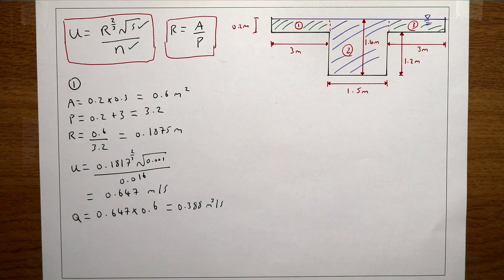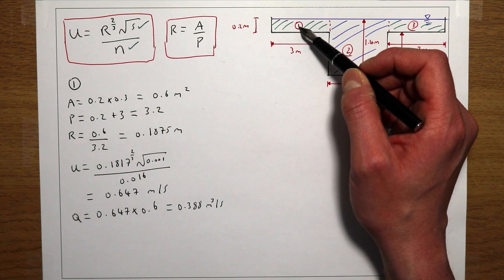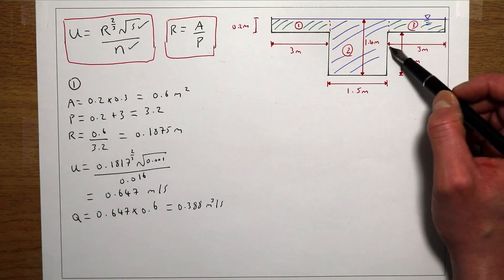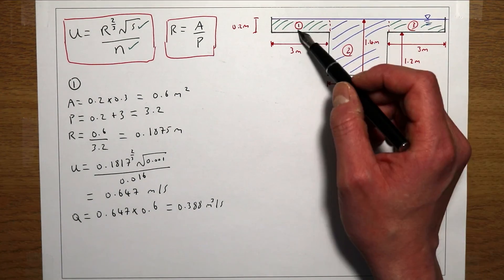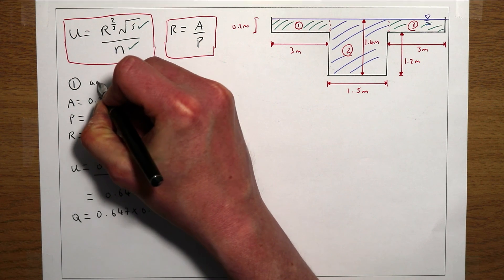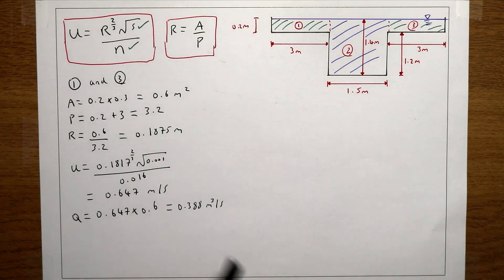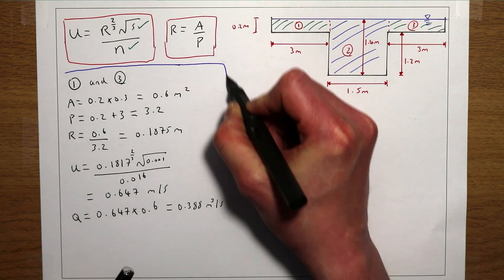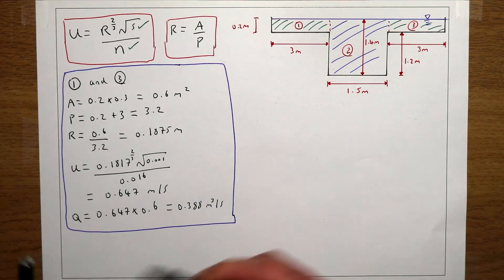Sub-channel 3 (right limb) has the same width, depth, and Manning's n as sub-channel 1, so the calculation is identical. The velocity and flow for sub-channel 3 are therefore the same: 0.647 m/s and 0.388 m³/s respectively.